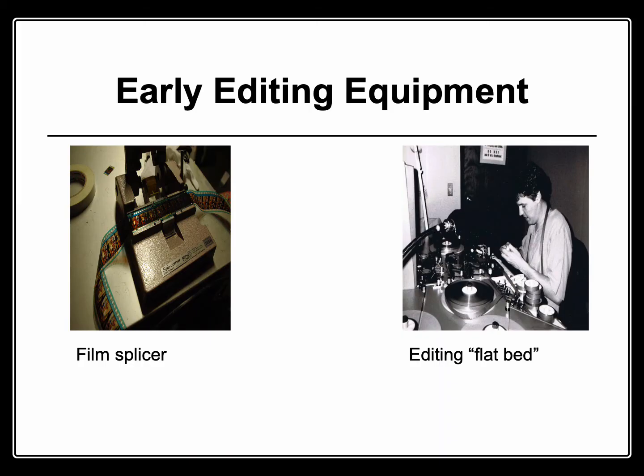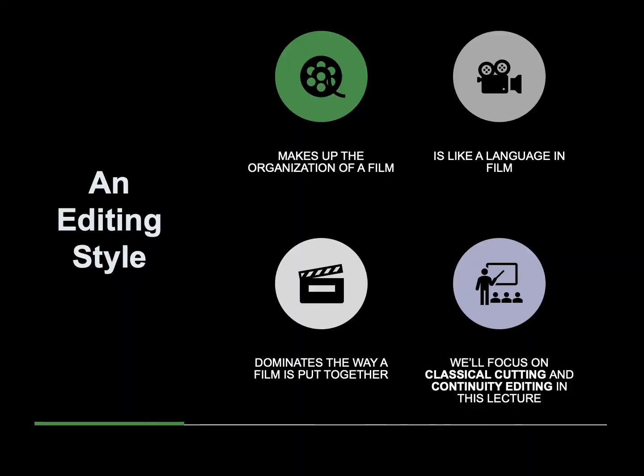Two examples of early editing equipment: a film splicer and an editing flatbed. An editing style makes up the organization of a film and dominates the way a film is put together. An editing style is like a language in film. We'll focus on classical cutting and continuity editing in this lecture.